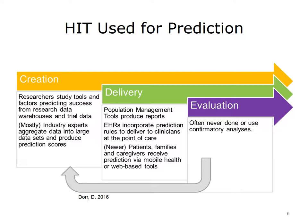In terms of delivery, HIT is used in reports produced by health systems. Additionally, rules might be put in electronic health record systems, or EHRs, to deliver recommendations at the point of care. Patients and families use HIT when they receive information via email or the web. The use of HIT for evaluation in terms of implementation and benefit-harm analysis in the real world is often limited. Industry sees the algorithms as important intellectual capital, and researchers only rarely have taken the time to see what happens after their rules are implemented. This is changing, however, as more informatics research looks at dissemination and implementation.